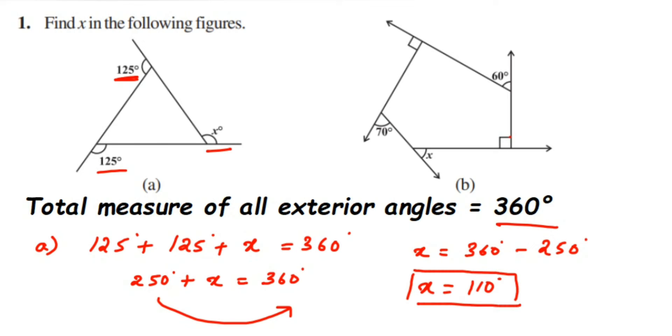That's it. Now this was the first question. Now second question is also similar to the first one where the polygon is different. They have given pentagon here instead of triangle. Now let's see how to find out the answer for second question.